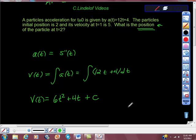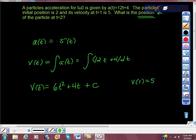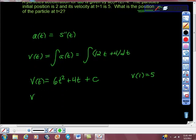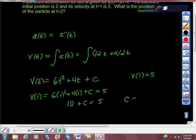And I ended up getting v(t) equals 6t squared plus 4t plus C. While I'm here, we know that v(1) equals 5. So I'm going to take that v(1), so 6 times 1 squared plus 4 times 1 plus C equals 5. This goes to 10 plus C equals 5. And just some quick algebra, C equals negative 5.